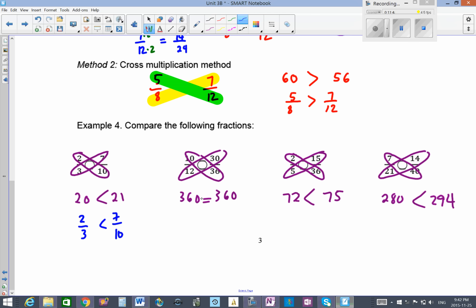Here 10 times 36 is 360, and the other one is also 360, so they're equal. 10 over 12 are equivalent fractions with 30 over 36. Here 2 times 36 is 72, and the other one is 75. So 2 fifths is less than 15 over 36. And here 7 over 21 is less than 14 over 40.